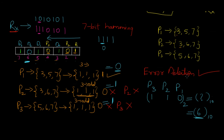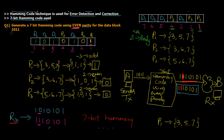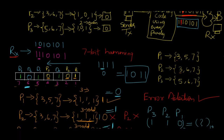That's how you perform error detection as well as error correction. The key step is: wherever parity bits are correct, assign 0; wherever there is an issue, assign 1. Convert that binary number to decimal to get the error position. The receiver has now recovered the correct data 1011 by performing error detection and correction using Hamming code.